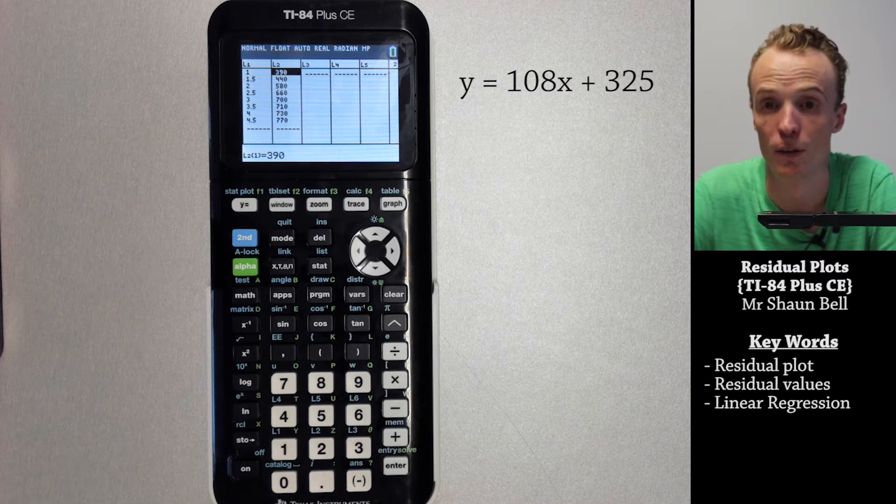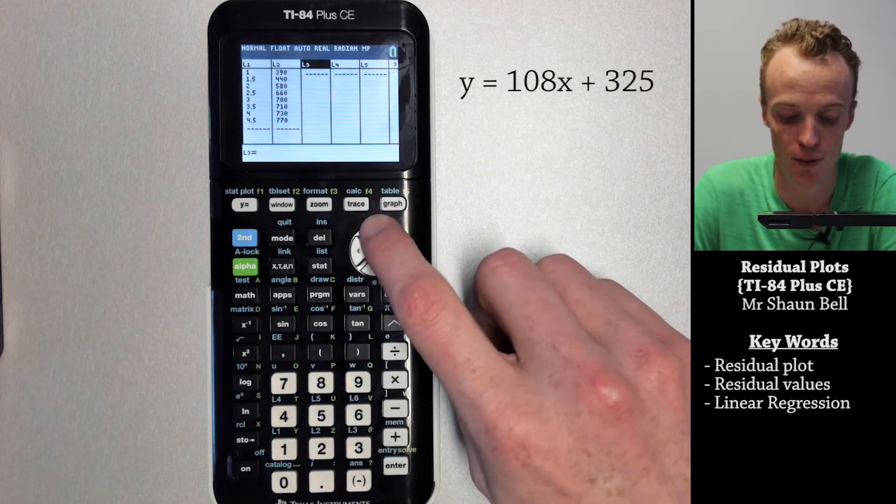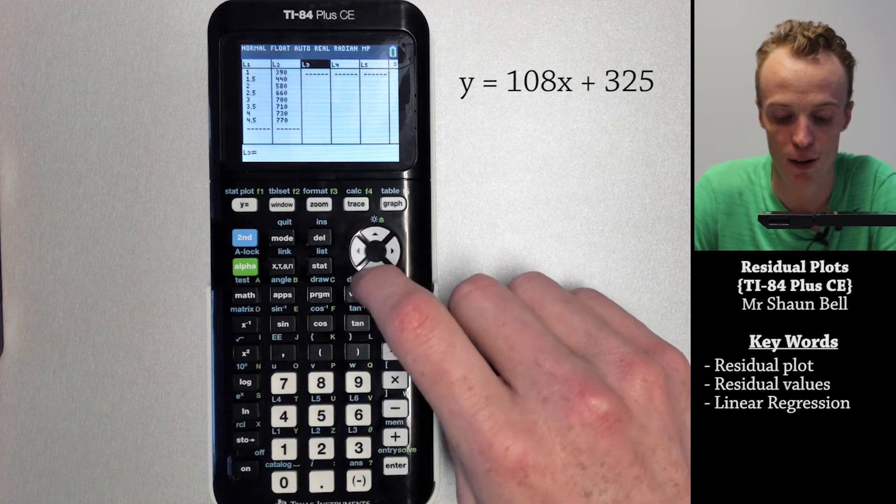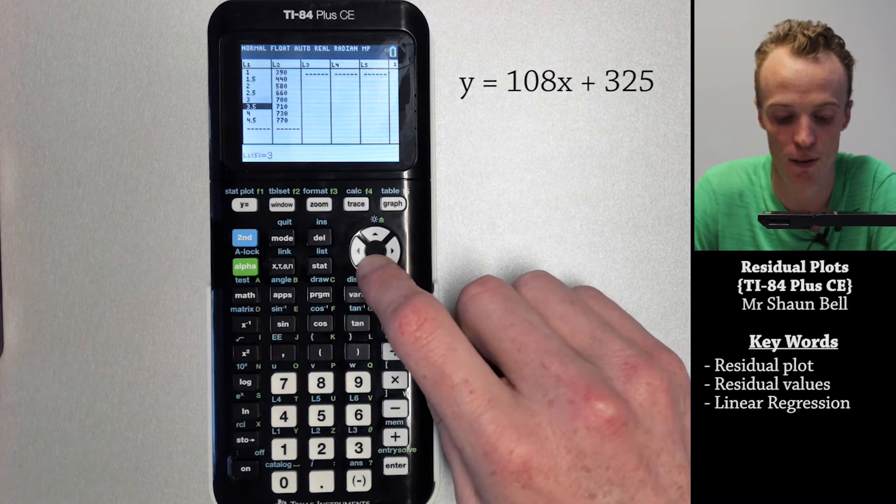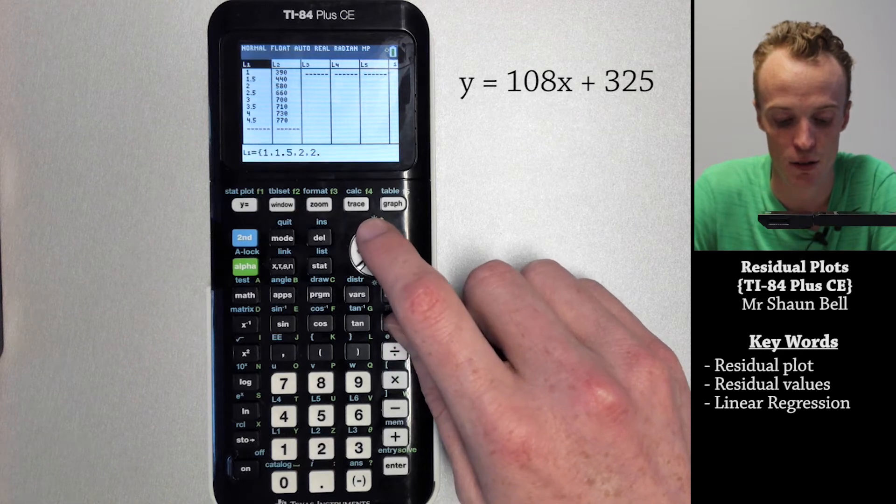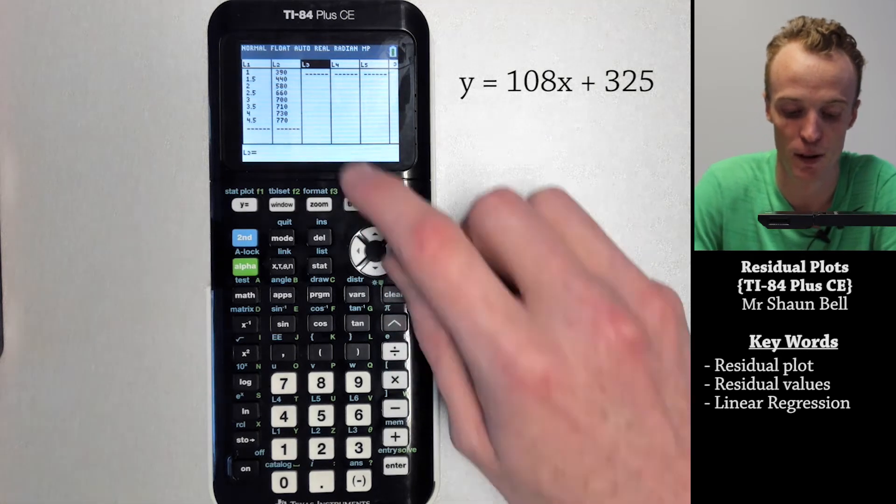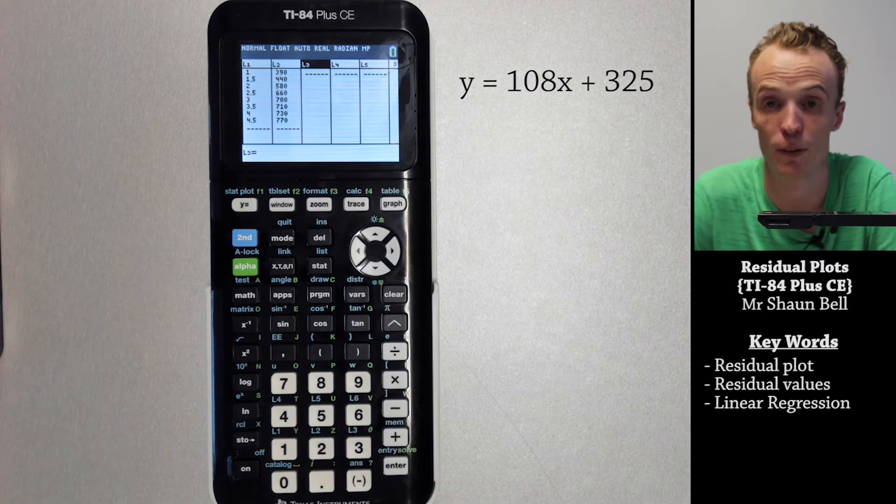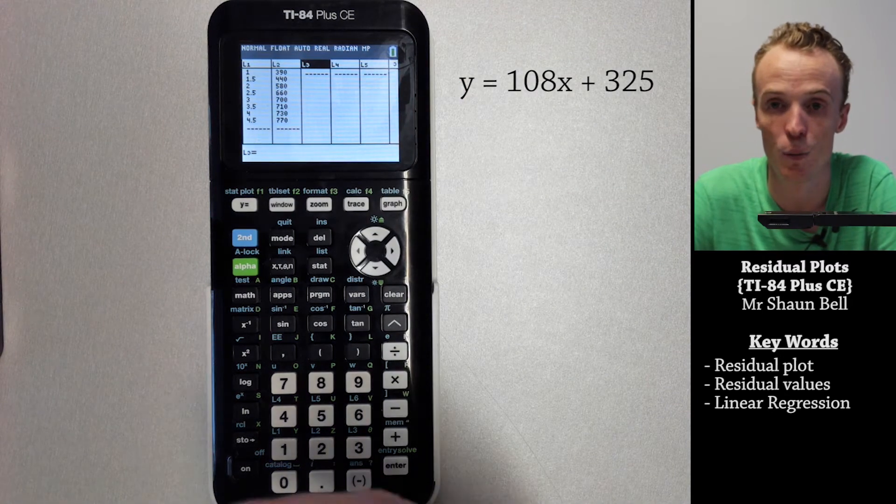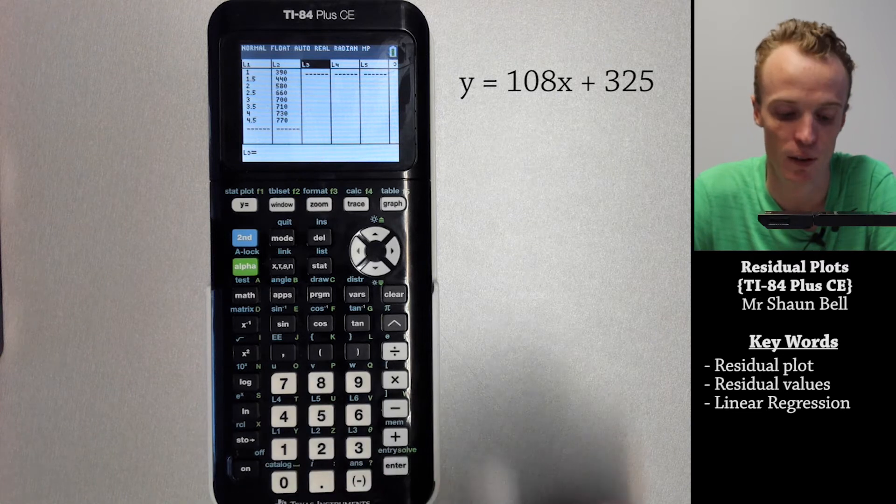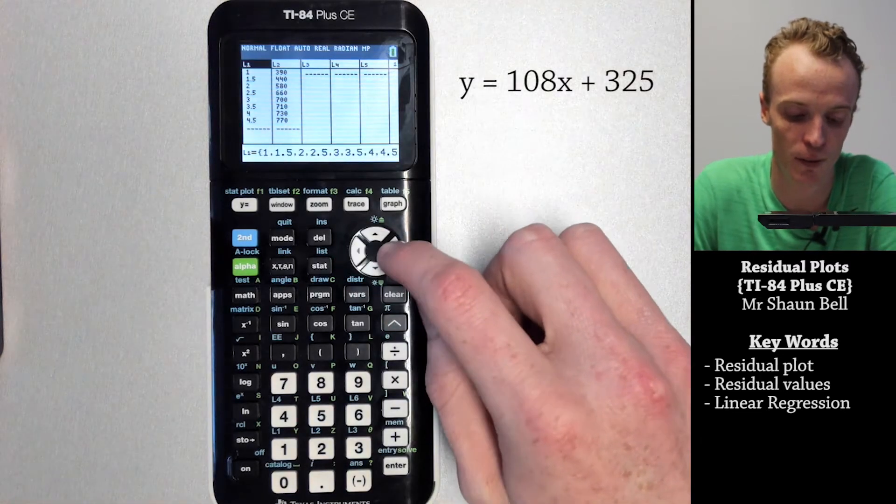So what I first need to do is create a list in list three of substituting these x values into that formula. To do that I highlight list three by moving my cursor to the top of list three, and what I'm wanting to do is put that equation in but replace x with list one.